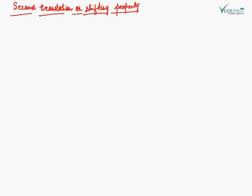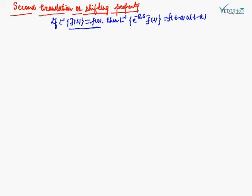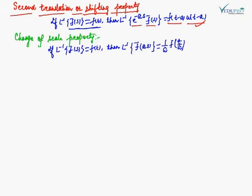Second shifting property: if the inverse Laplace transform of F̄(S) equals F(t), then the inverse Laplace transform of e^(−AS)·F̄(S) equals F(t−A)·U(t−A), where U(t−A) is the unit step function. Change of scale property: if L⁻¹{F̄(S)} = F(t), then L⁻¹{F̄(AS)} = (1/A)·F(t/A). That is, T is replaced by T/A and the result is multiplied by 1/A.